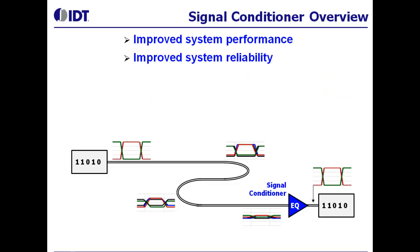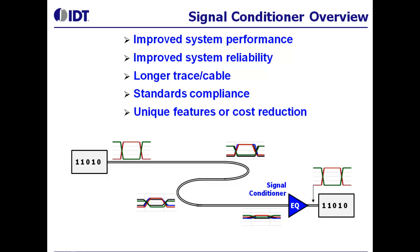Improved signal quality results in improved system performance because there are fewer lost packets and retries. Better signal quality improves long-term system stability and reliability due to better signal amplitude and timing margins. Signal conditioners enable longer signaling distances and provide other advantages, too.